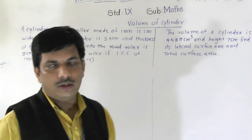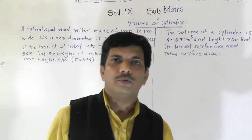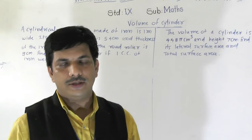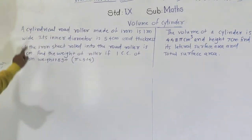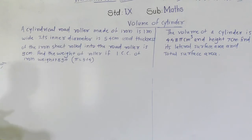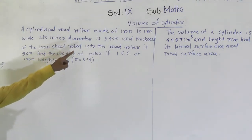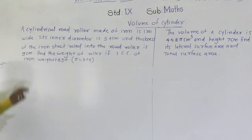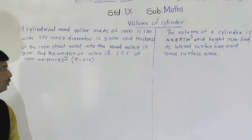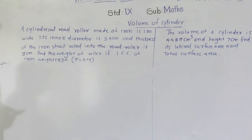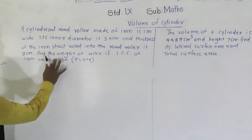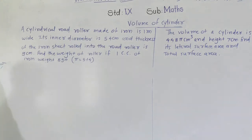Hello everybody, today I am with you again with some problems depending on the volume of a cylinder. The first problem: a cylindrical road roller made of iron is 1 meter wide, its inner diameter is 54 centimeters, and the thickness of the iron sheet rolled into the road roller is 9 centimeters. Find the weight of the roller if 1 cubic centimeter of iron weighs 7.8 grams. The value of pi is given as 3.14.